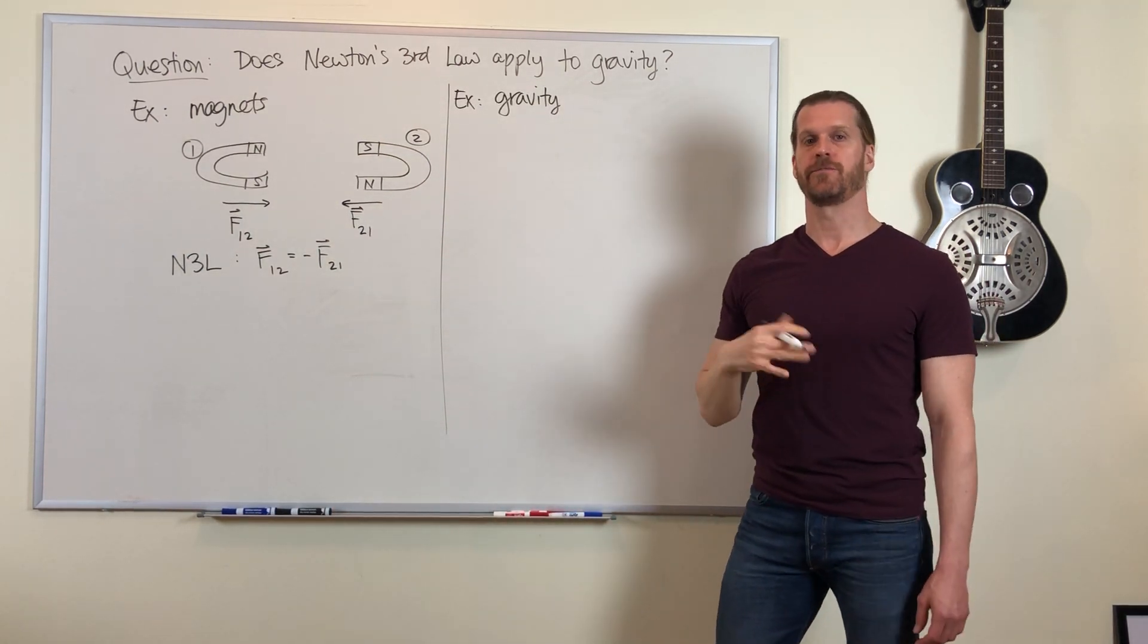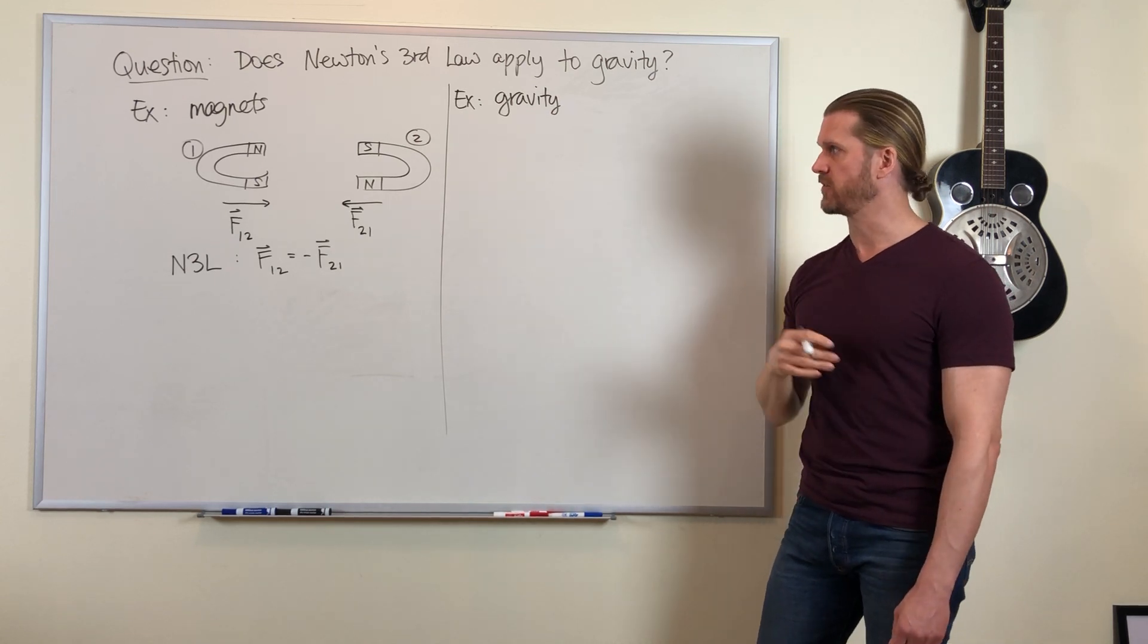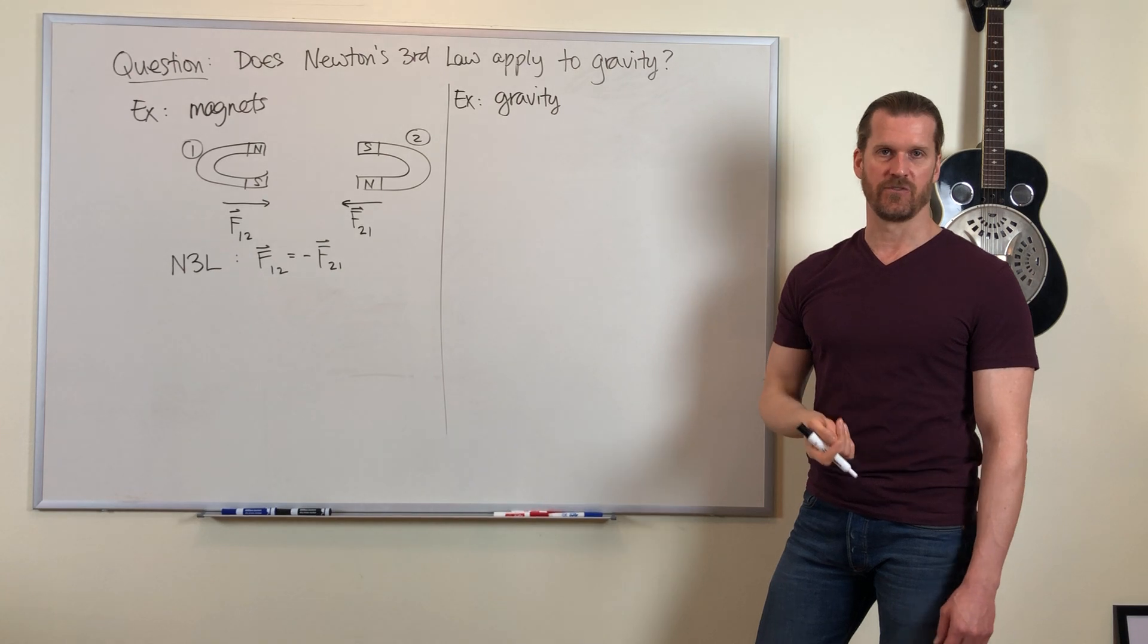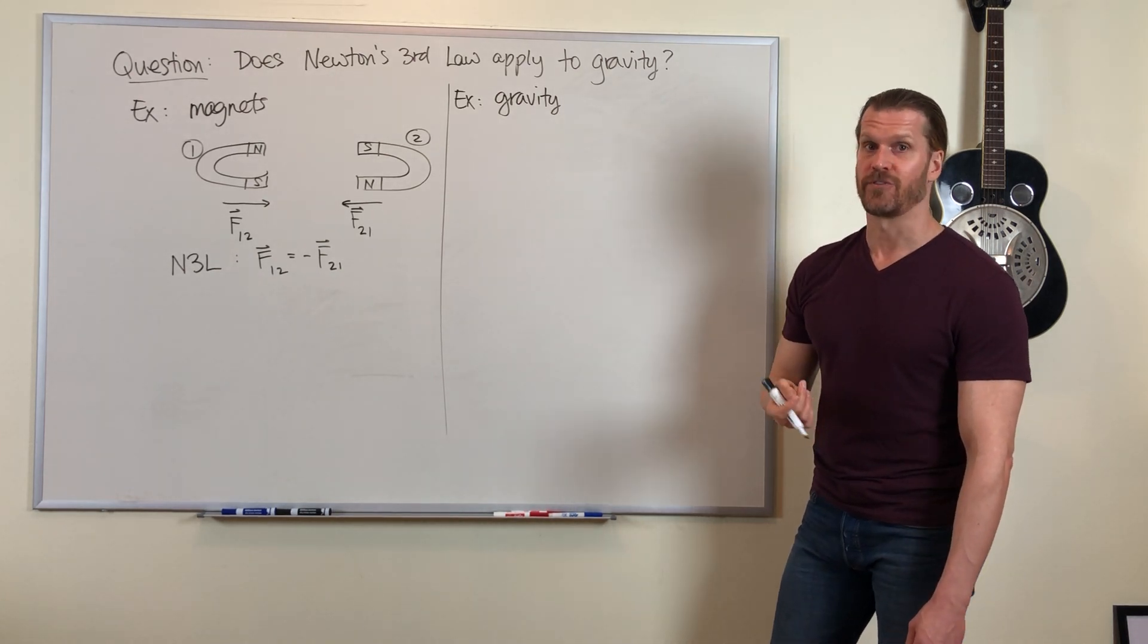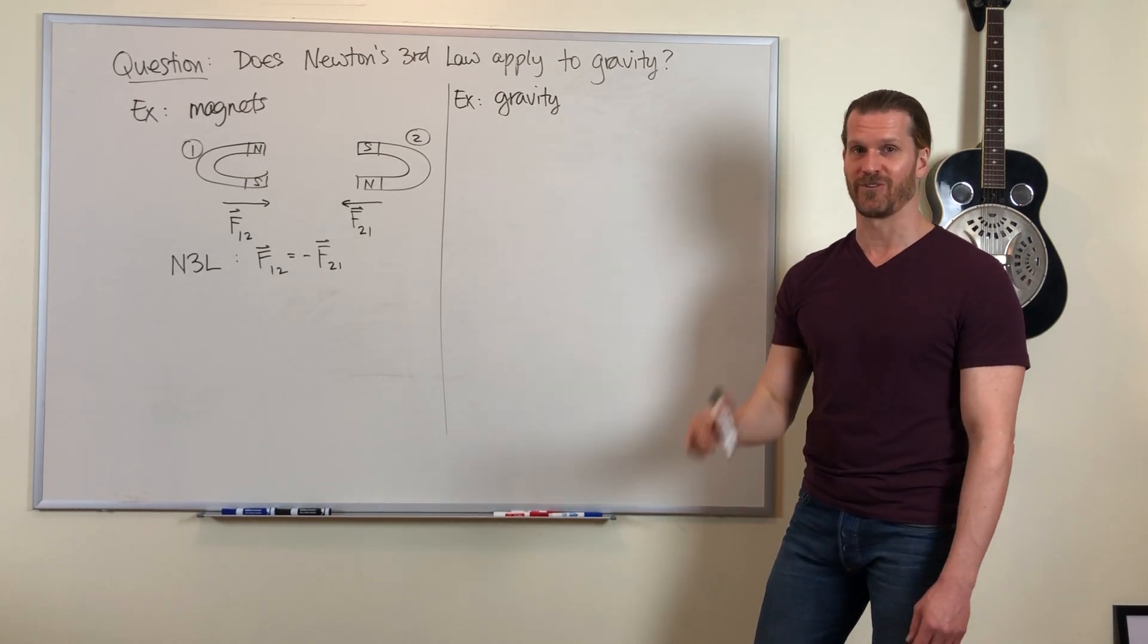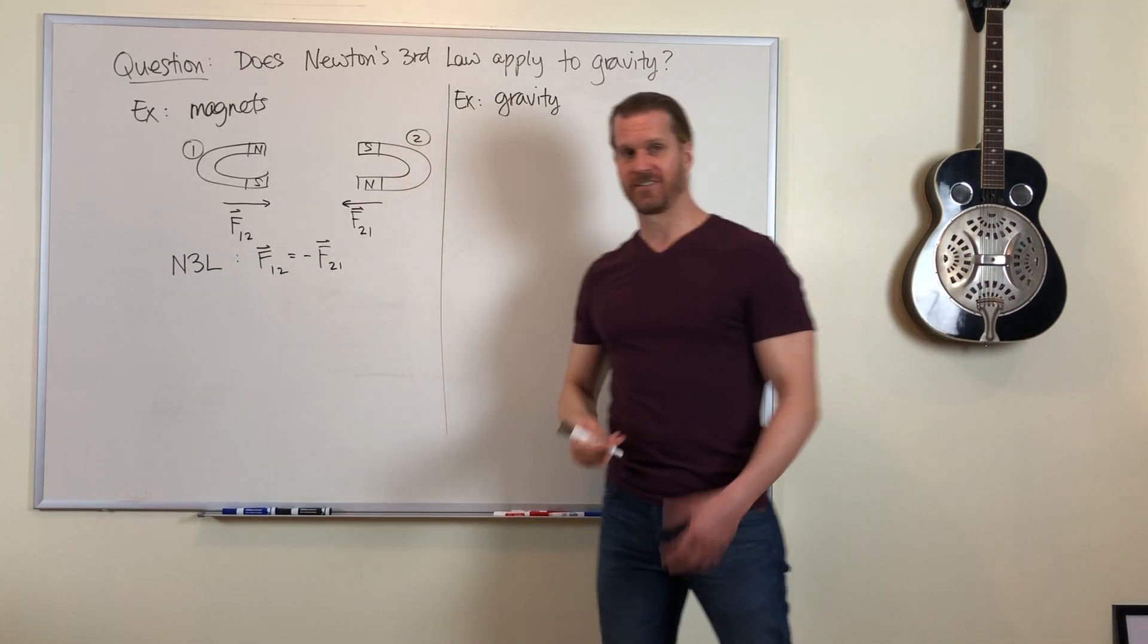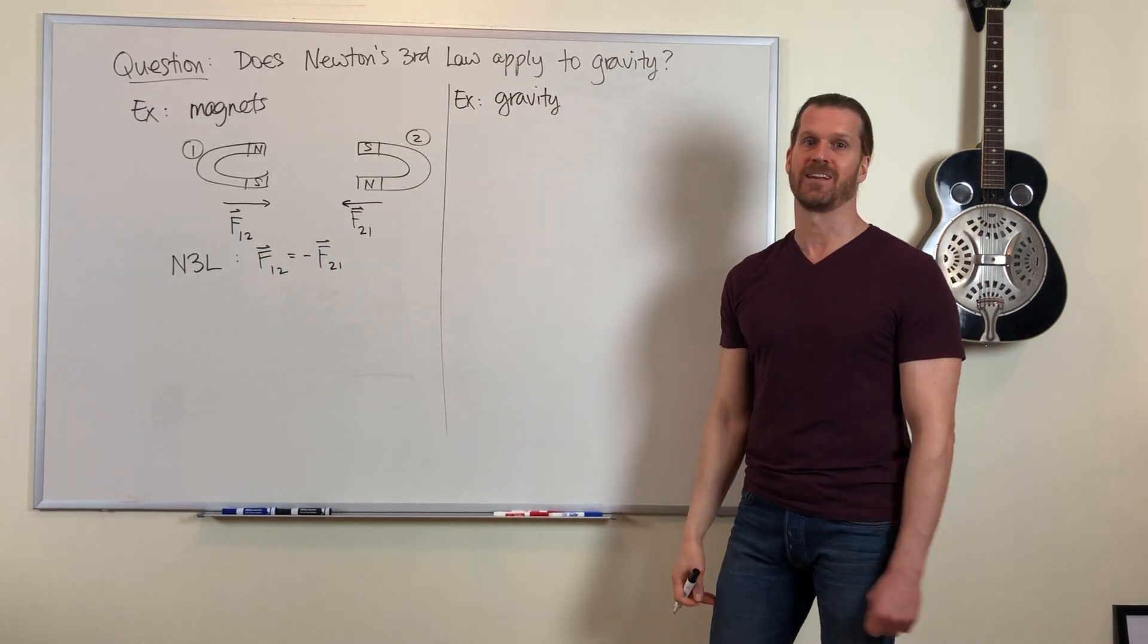Gravity is also a field force, just like magnetism, so the two objects involved don't have to be in direct contact. But notice I said two objects involved. It requires two things to produce a gravity force. It requires two magnets to produce a magnetic force.